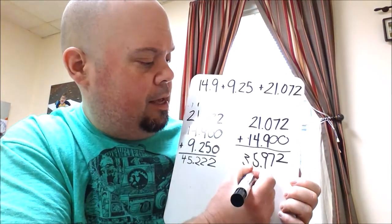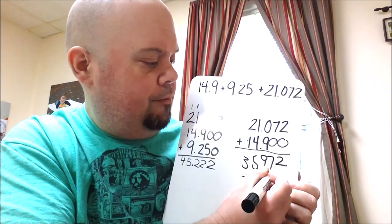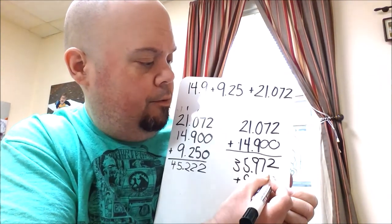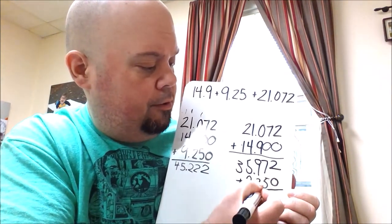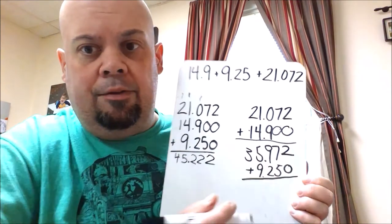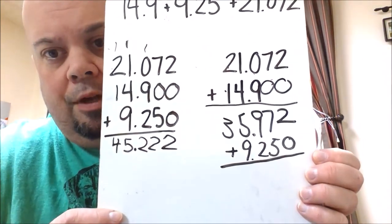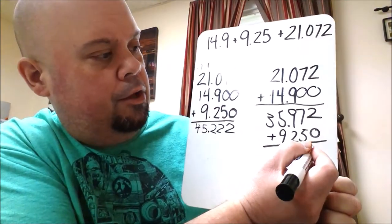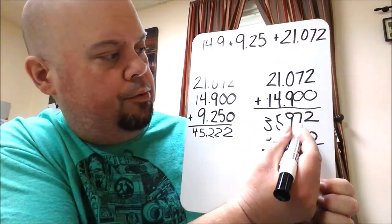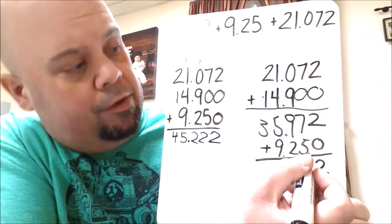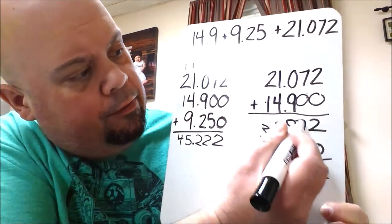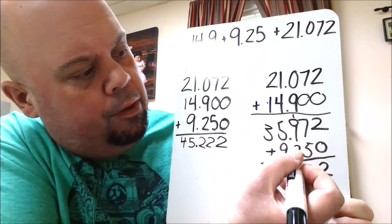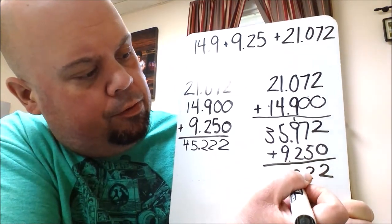So I've got to do my 9 and 25 hundredths. We're going to add a zero so that it goes all the way out and lines up with what's there. So now you should have something that looks like that. And then again start adding. 2 plus 0 is 2. 7 plus 5 is 12. Regroup your 1. 1 plus 9 is 10. Plus 2 is 12.